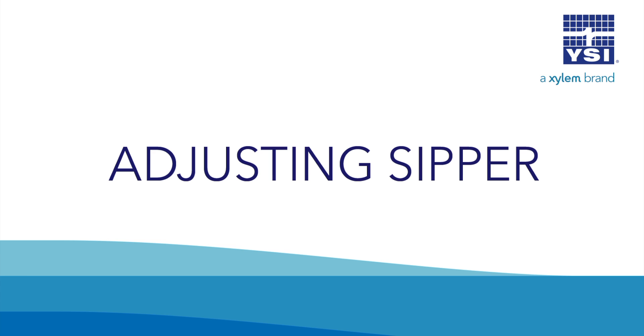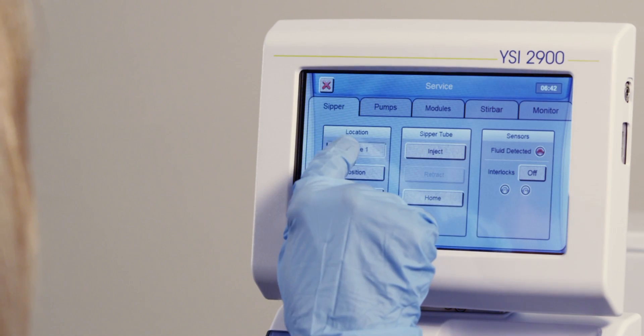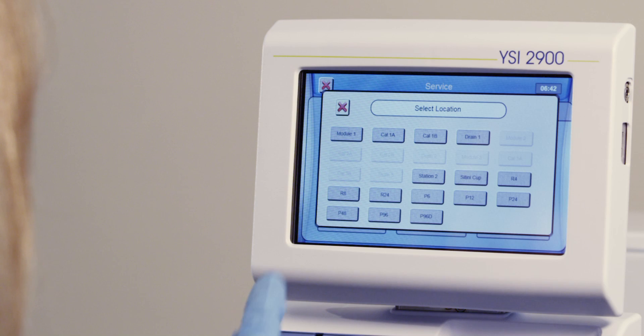If you have not adjusted your sipper yet, from the main screen, press Service. Under the sipper tab, press Module 1, then press Position.